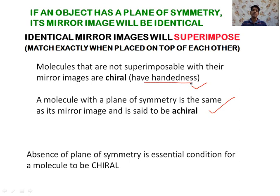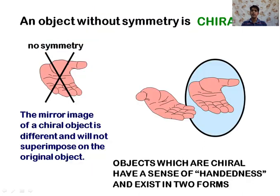Chiral molecules have the property of handedness — we can identify which is the left part and which is the right part. Objects that are non-superimposable on their mirror image are known as chiral objects, and chiral objects are of prime interest in stereochemistry. We can conclude that the absence of a plane of symmetry is an essential condition for a molecule to be chiral.